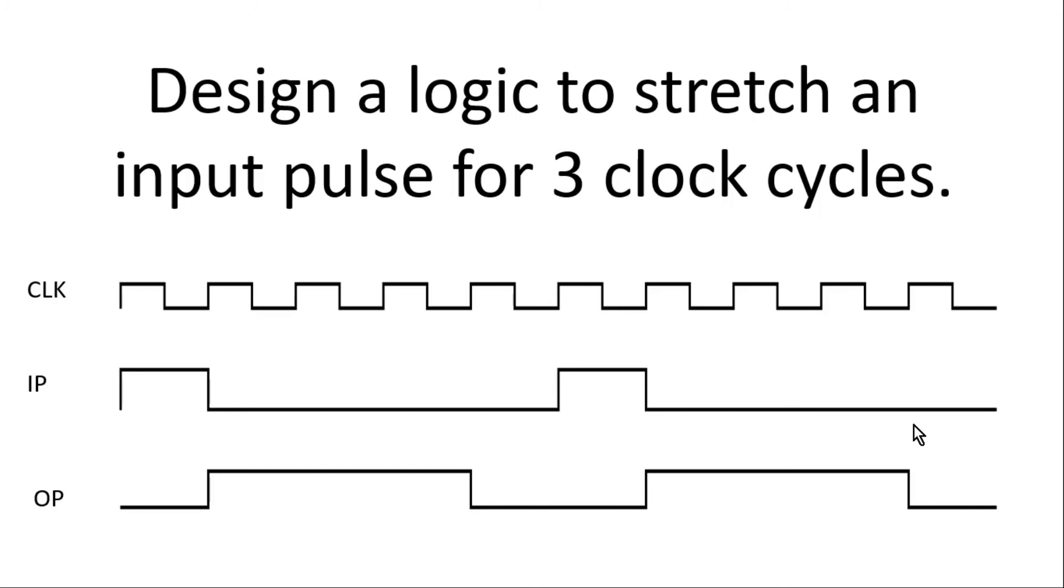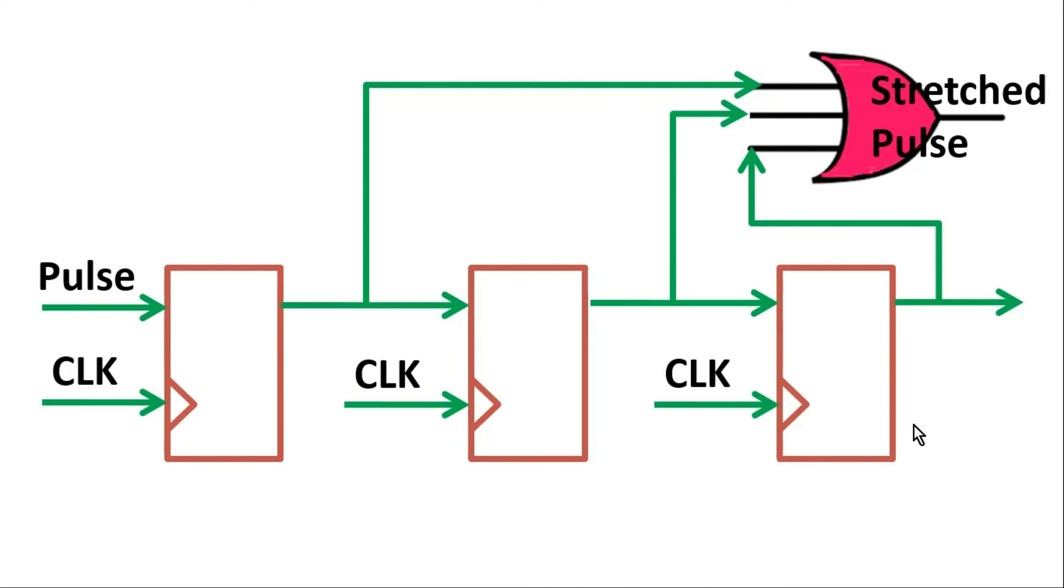Okay, let me reveal its answer. This will be the final solution—the final logic to stretch an input pulse by three clock cycles as requested in the question. So this is the pulse signal. We have to put three flops, and the output of all the flops we need to give to an OR gate, and the output of this OR gate will be the stretched pulse.